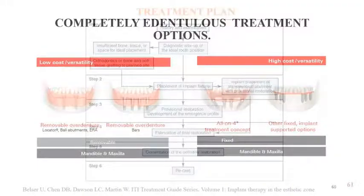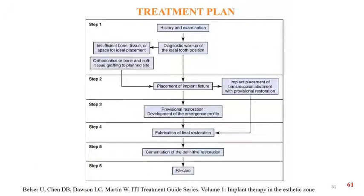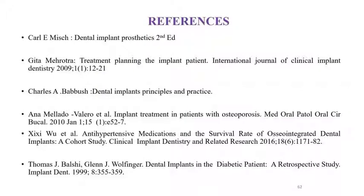In summary, the treatment plan requires a proper history and examination of the patient, checking for sufficient bone or tissue and implant positioning, and completing a diagnostic mock-up or wax-up of the ideal tooth. Once the treatment plan is formulated, the implant is placed, a provisional restoration is given, followed by the second stage with a final restoration, and then the maintenance phase is carried out. Thank you.